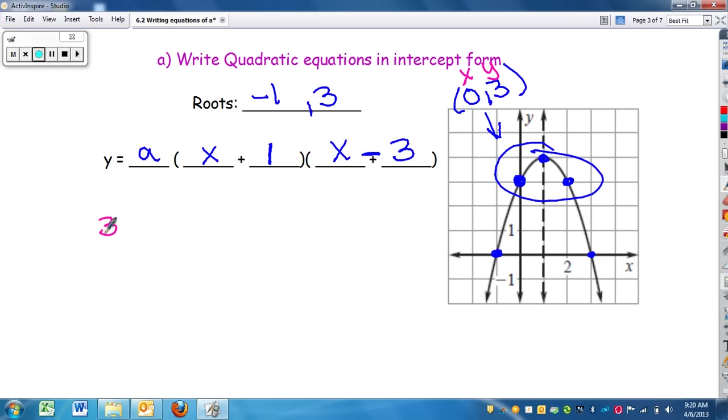So y is 3 equals a, and substitute in 0 for x. So I have 0 plus 1 and 0 minus 3. Order of operations, I have to do parentheses first. So I go 0 plus 1, which is 1. So I have a times 1, and then 0 minus 3 is negative 3. So then I have 3 equals 1 times negative 3 is negative 3. You always write numbers in front of variables when it's just by itself. And then I just have to do simple division. And then solve for a, which is negative 1.